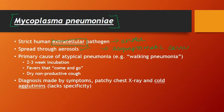When M. pneumoniae does cause disease, the most common clinical presentation is tracheobronchitis. It's associated with low-grade fever, malaise, headache, and a dry non-productive cough. This cough is associated with the atypical pneumonia that we associate with this organism — it is the primary cause of atypical pneumonia.